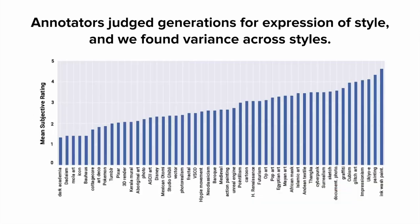After presenting generations in these art styles to annotators, we found significant variance across art styles—the model was better at some styles than others. Styles it did particularly well in included ink wash painting, glitch art, Impressionism, and Ukiyo-e. Styles it did worse in were things like dark academia, Dadaism, and Mola art—things it probably found more difficult to understand or convey in images.